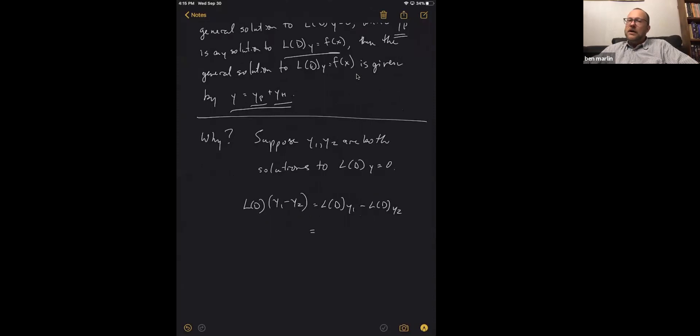Then you'll have L of D y1 minus L of D y2. But we said y1 and y2 are both solutions to—and I have messed it up, and I don't feel like re-recording this—they are both solutions to the non-homogeneous differential equation. So that means that you will get f of x here, and f of x here. And if that's the case, when you subtract them, you get zero.